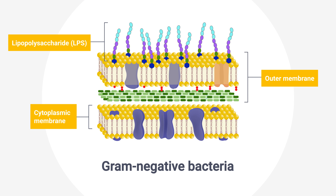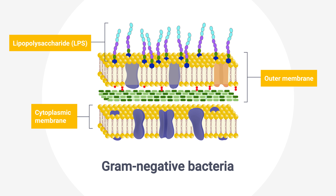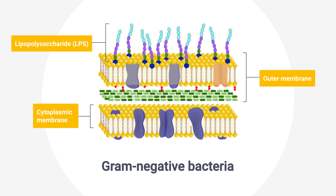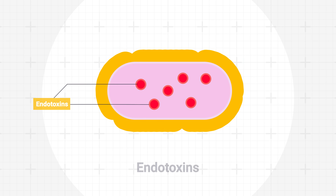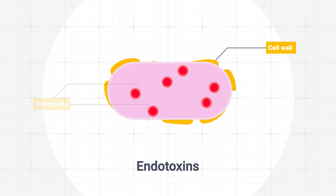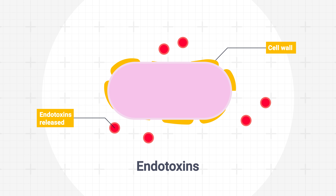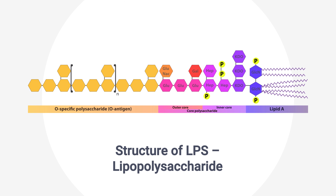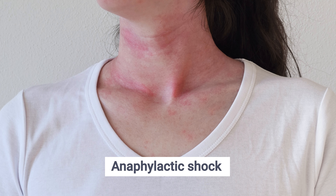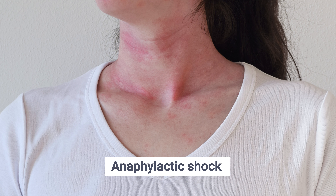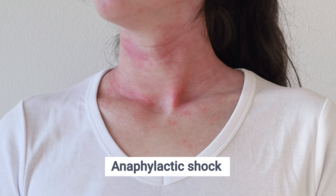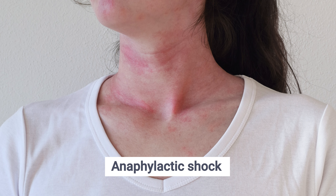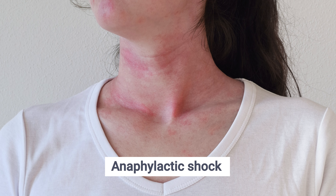Endotoxins are toxic substances bound to the bacterial outer cell membrane of gram-negative bacteria and released when the bacterium ruptures as a result of biocides or cell death. Endotoxins consist of lipopolysaccharides and lipoprotein complexes which can induce inflammation and fever. In some cases this can lead to anaphylactic shock, which can be fatal particularly for immunocompromised individuals.